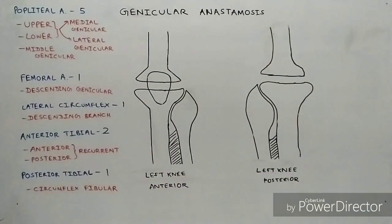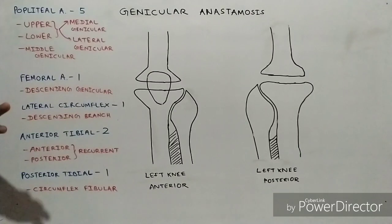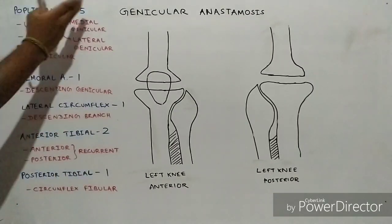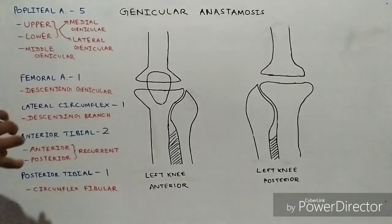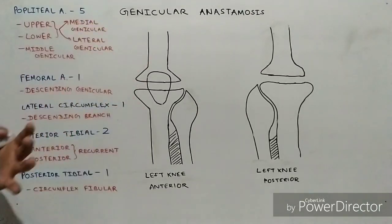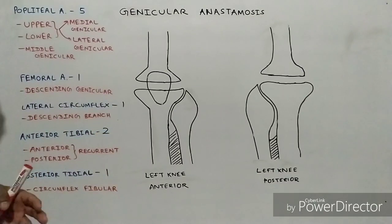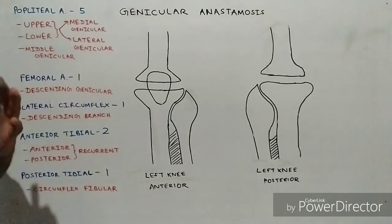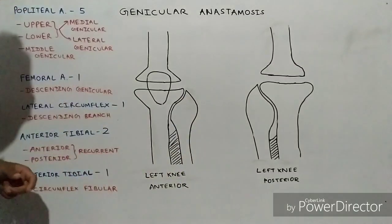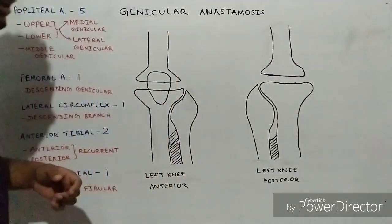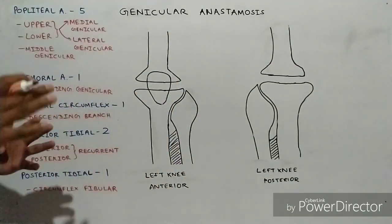The first artery which contributes to this anastomosis and forms the base of it with its genicular branches is the popliteal artery. It gives five genicular branches to this anastomosis. Before we look at how these branches contribute, we should understand what the popliteal artery is and how it is formed.